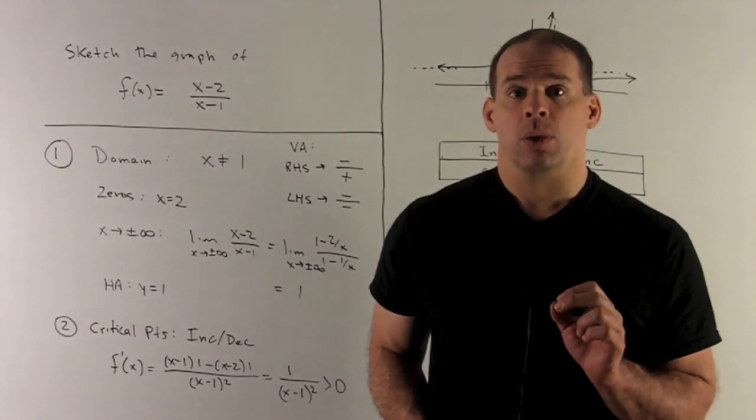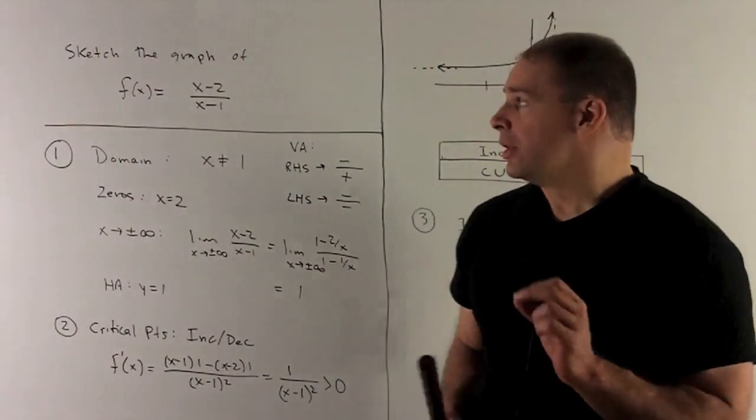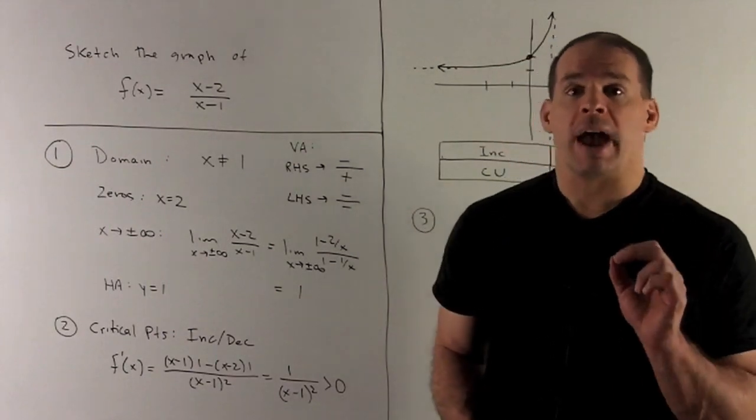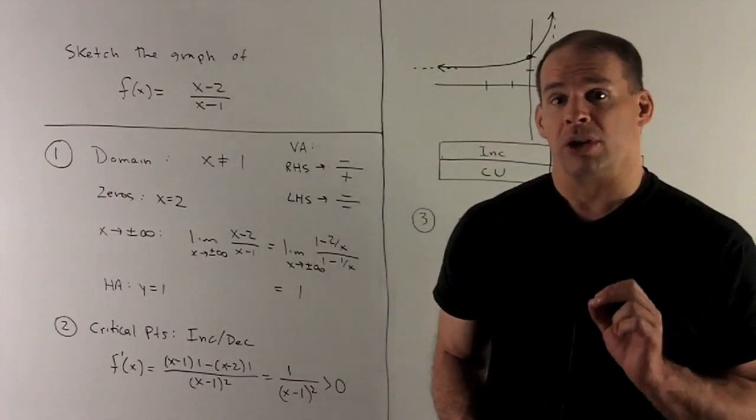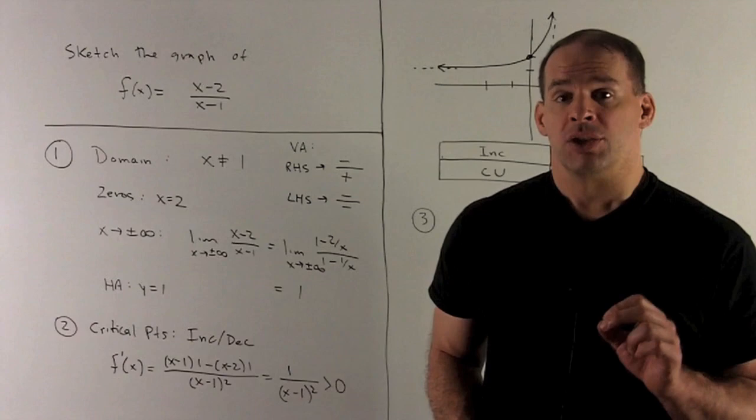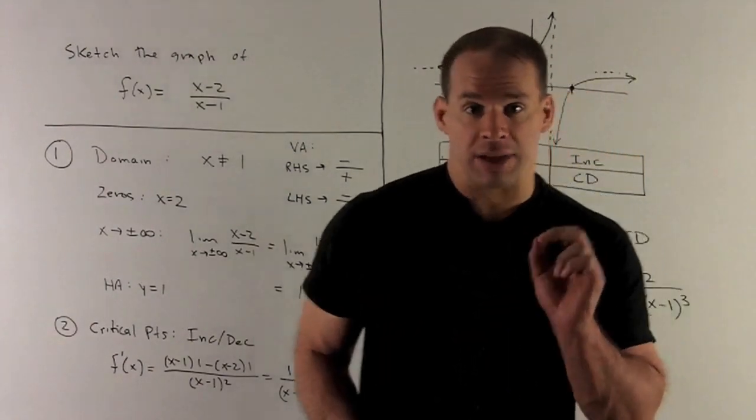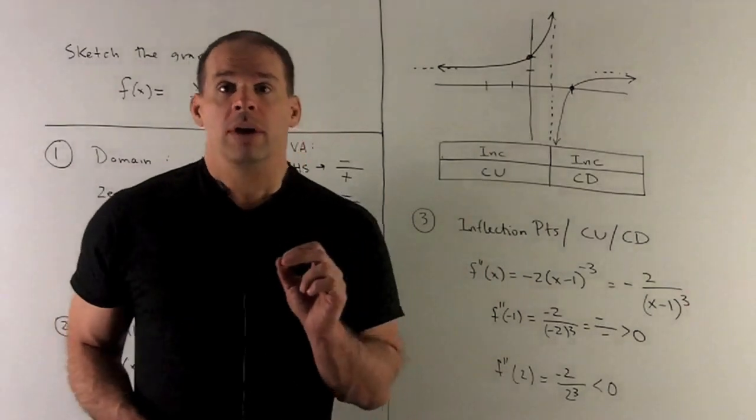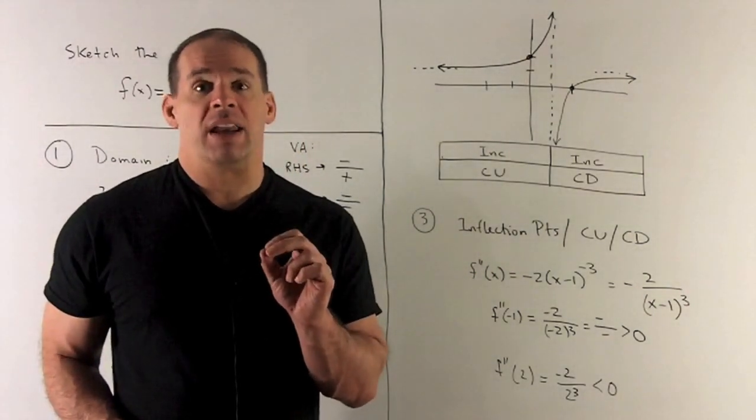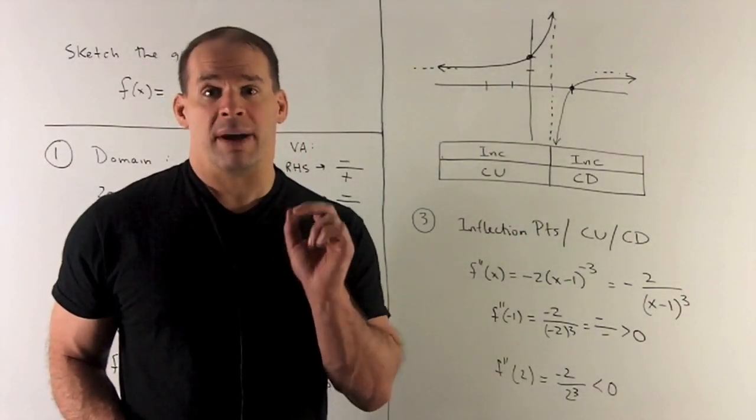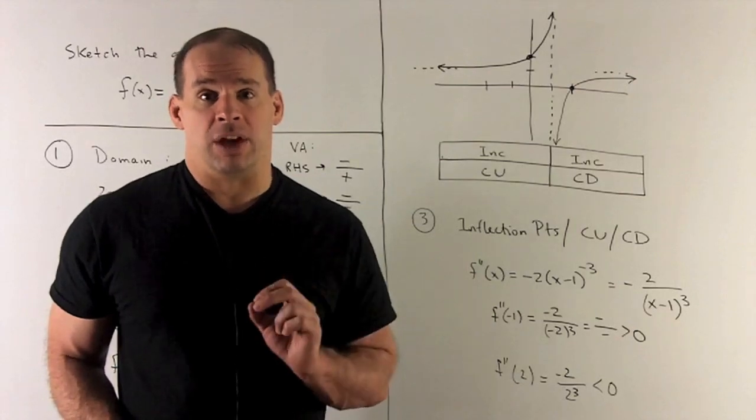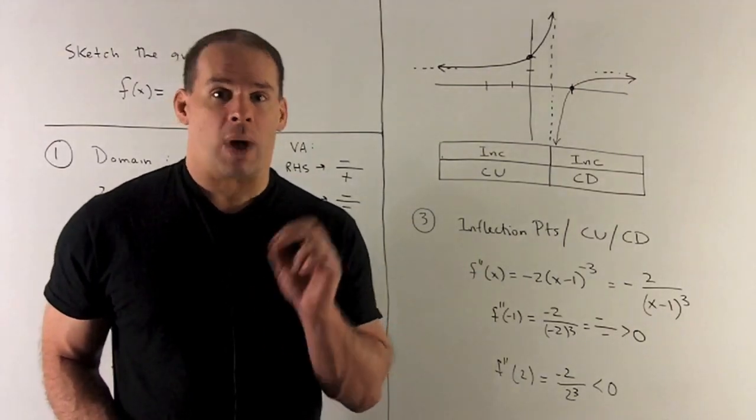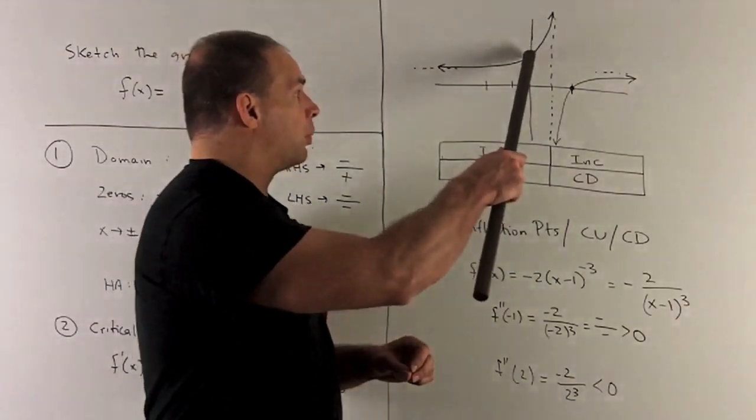What else can we do? We can also look for zeros. I'll have a zero for f if the numerator is equal to zero. So we'll have a zero at x equal to 2. If I want a point on the other side, I could just put zero into my function, and that'll give me the y-intercept equal to 2.